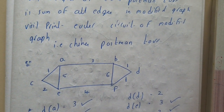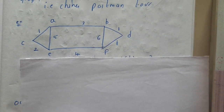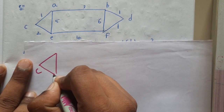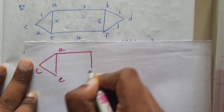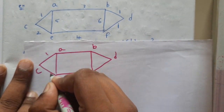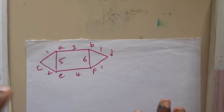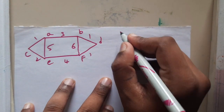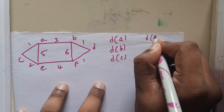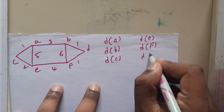Let us go through a small example. Make sure you write down the graph carefully - if you miss even a single edge, the whole solution will go wrong. Always recheck twice before continuing to solve the problem. The first step is to find the degree of A, degree of B, degree of C, degree of D, degree of E, and degree of F.